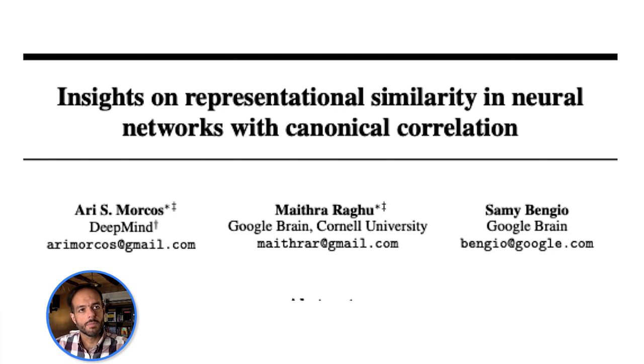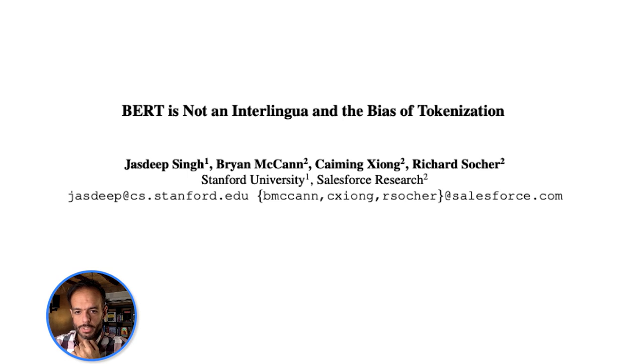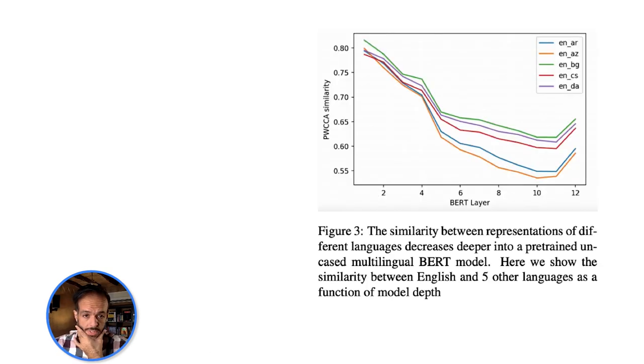Shortly after the SVCCA paper came out, another method was proposed called PWCCA, projection weighted CCA, which has the positive property of being more robust to noise. A bunch of papers started using PWCCA to make comparisons. One that I really enjoyed is Singh et al., that looks at multilingual BERT and compares how multilingual BERT represents various languages.